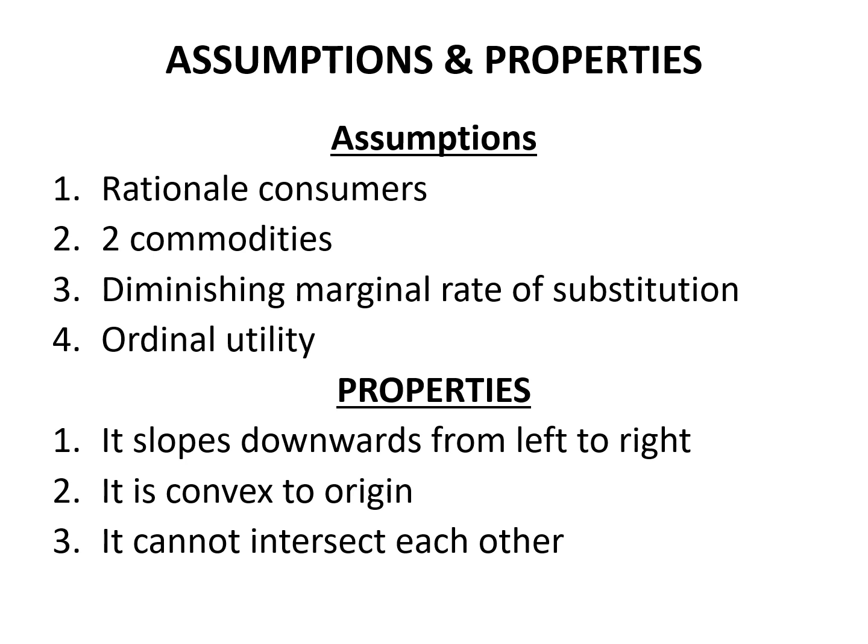Properties of the indifference curve: it slopes downwards from left to right, it is convex to origin, and it cannot intersect each other. The indifference curve always slopes from left to right, indicating that to maintain the same level of satisfaction — for example, if a consumer increases consumption of commodity X, he has to give up certain units of commodity Y. The reason is that if the consumer decides to have one more unit of a commodity, the quantity of another good must fall so that total satisfaction remains the same.